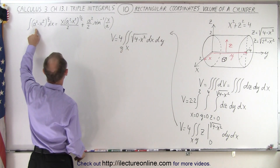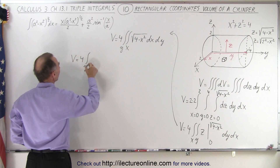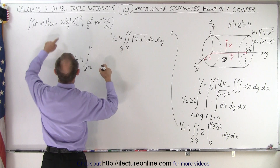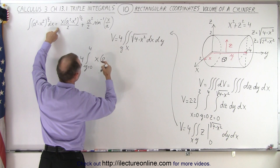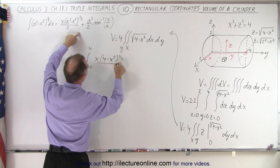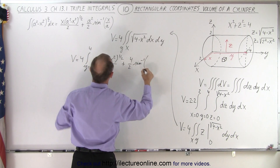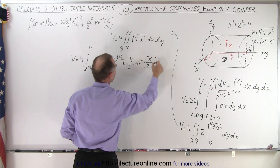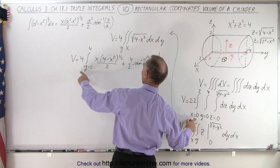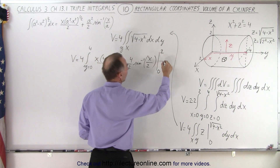This integral has the same format as a standard result, so we end up with the volume equals 4 times the single integral over y from 0 to 4, and the x-integral gives: x times (4 minus x²)^(1/2) divided by 2, plus 4 divided by 2 times the inverse sine of x over 2, evaluated from x equals 0 to 2.